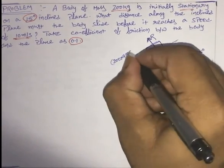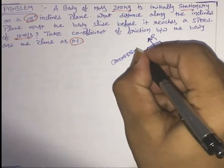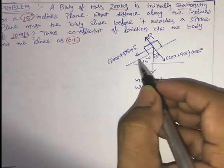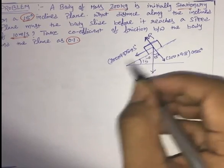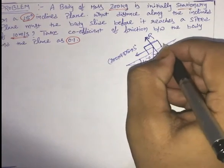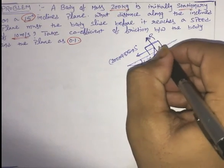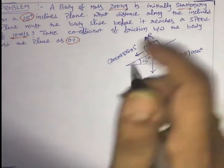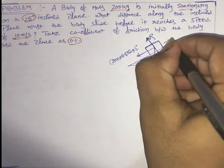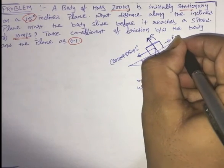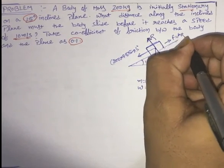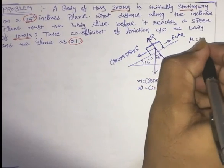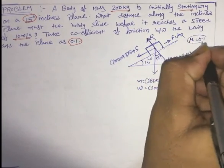As this is a rough surface, the body will move in the downward direction. It starts from rest, so initial velocity is 0. It is traveling down the slope, so the frictional force acts opposite to motion. Friction force F equals mu into R, where mu is 0.1 as given in the question.